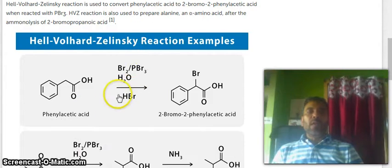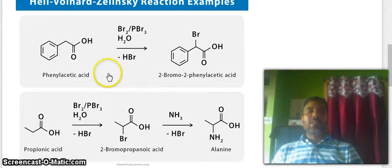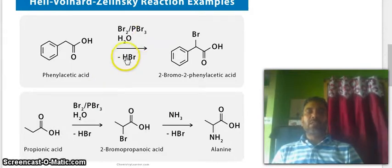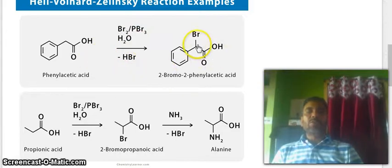Look at this scheme. Hell-Volhard-Zelinsky Reaction. Phenylacetic acid reacts with Br2, PBr3, H2O. Remove HBr. You see this is the alpha position.